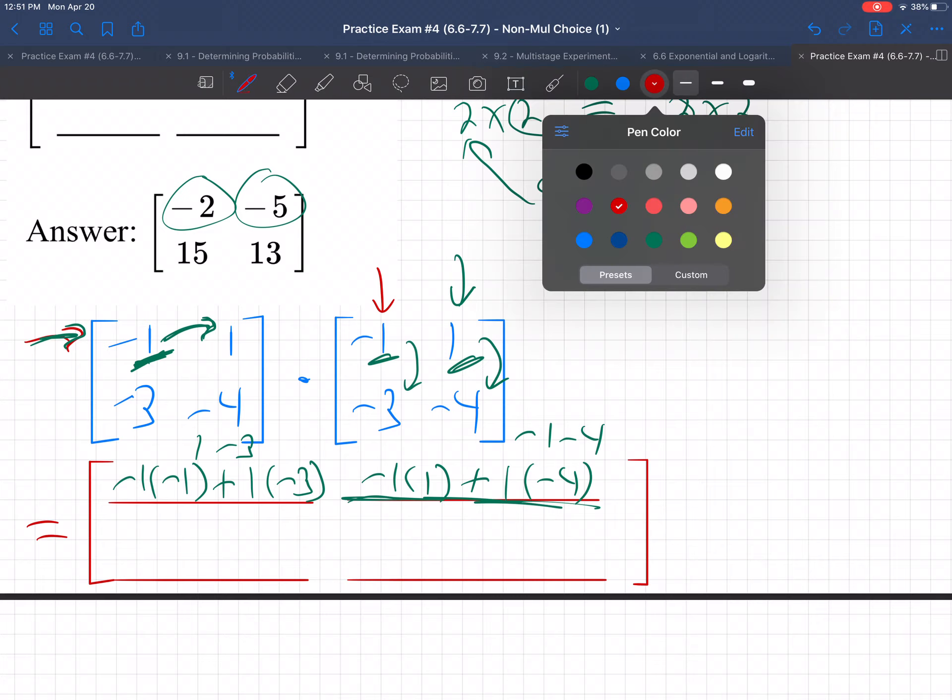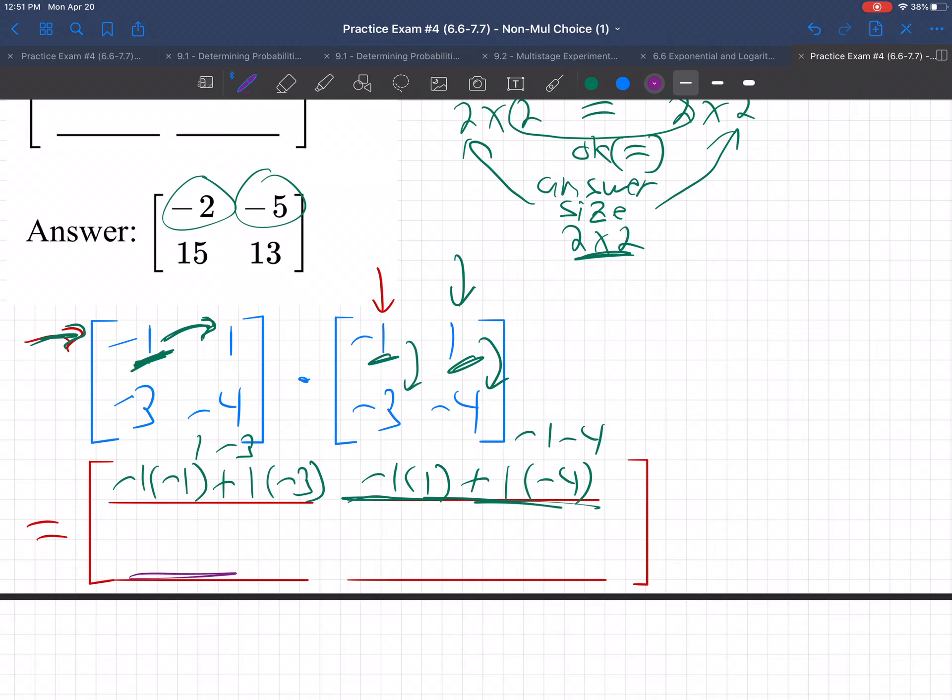Now I'm going to do the bottom left. So I'll go across the bottom and go down the left. I'm going to go across the bottom and down the left here, multiplying at every step. So starting with negative 3 times negative 1, plus, and then jump across and down, negative 4 times negative 3. What is that? That's 3 plus 12. They both come out positive. 15. That's how they got that.